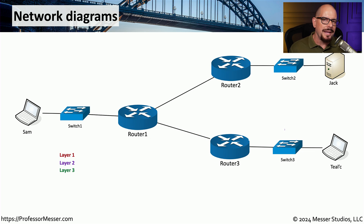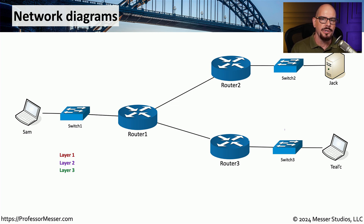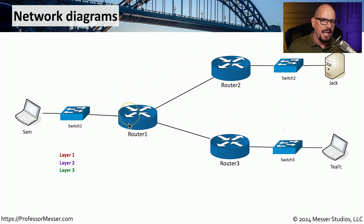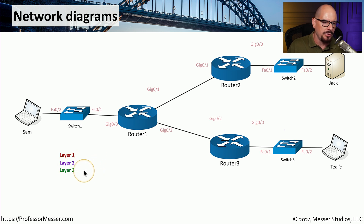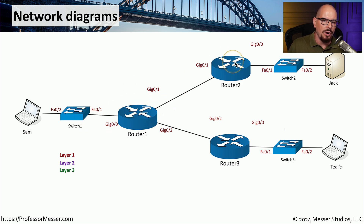You can also create network diagrams that combine layer 1, layer 2, and layer 3 views of the network. Layer 1 would be the physical layer, layer 2 would be the data link layer, and layer 3 would be your network layer. Here's an example of a network diagram that includes a number of switches, routers, and end stations, with labels for layer 1, layer 2, and layer 3. We can start with the layer 1 connection, which shows the physical interfaces for the switches and the routers where all of these wires are connecting and providing this connectivity.